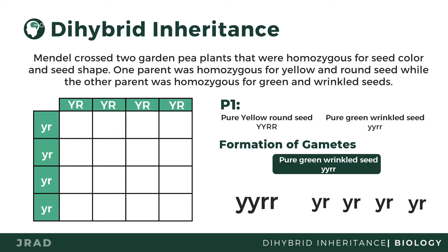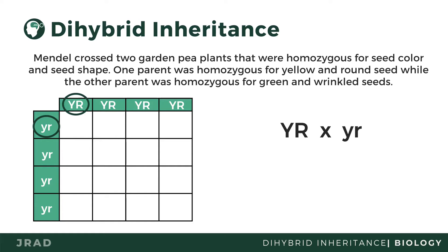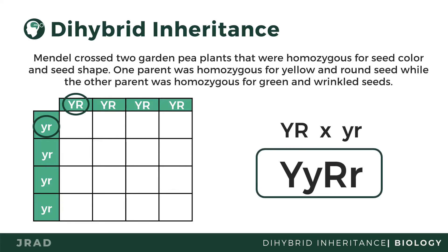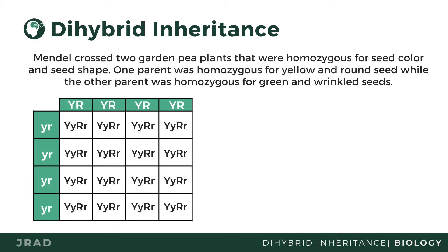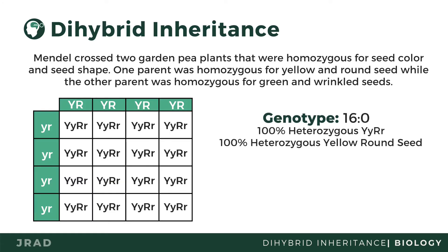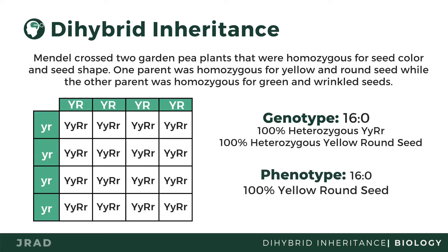Remember that each gamete must have one allele of each gene. The next step is to combine the gametes to predict what the possible offspring will be. Since the genotypes of the parents are written with Y in the beginning, we keep the same format and put capitals before lowercase. In this example, the genotype is 16:0 or 100% heterozygous yellow round seed, and the phenotype is 100% yellow round seed.